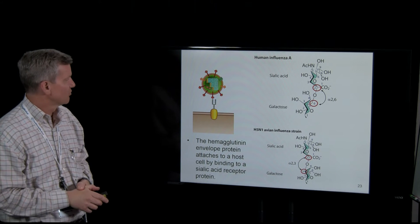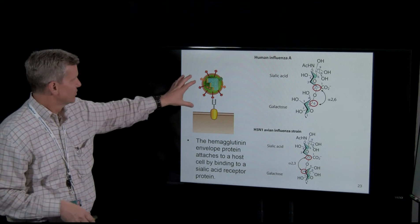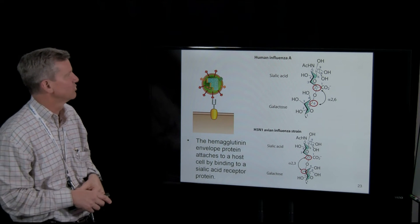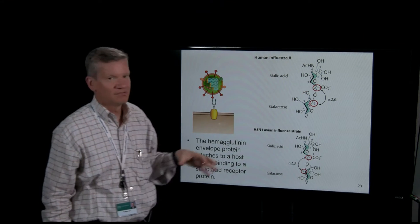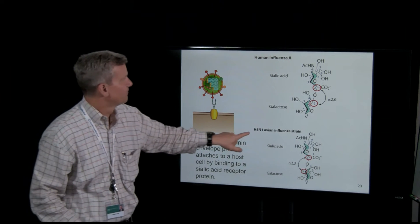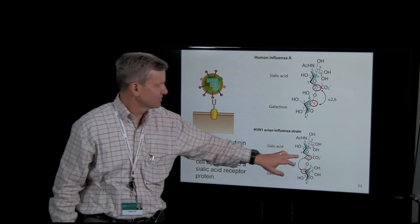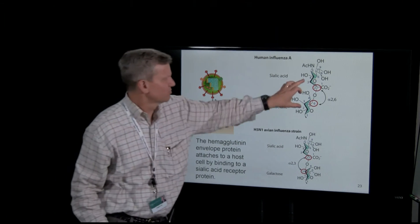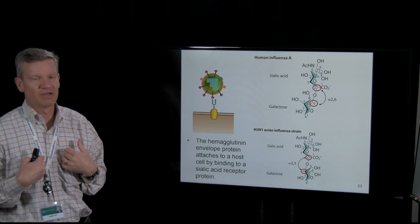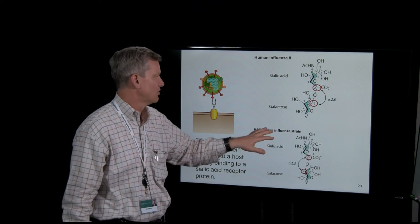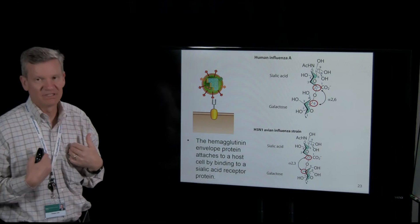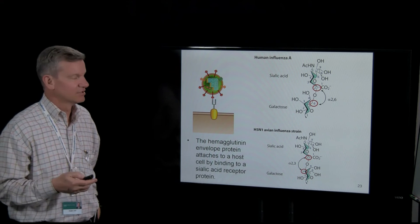Influenza binds via hemagglutinin onto sialic acid. Human sialic acid — probably in upper respiratory tract and nasopharyngeal epithelium — has a 2-6 linkage. An H5N1 avian influenza strain prefers to bind to a 2-3 linkage. These look structurally similar, and we actually have the 2-3 linkage deeper inside our respiratory epithelium. This is how an avian or non-human strain can infect humans, and binding deeper in the respiratory epithelium could also result in more severe disease.